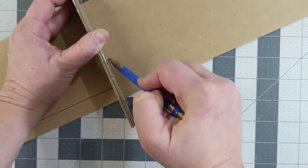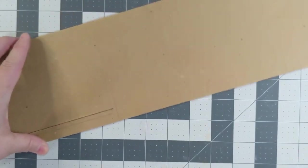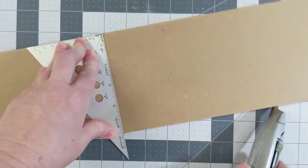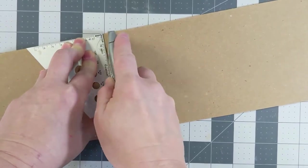You'll want to have the height about an eighth of an inch or two book board widths taller than the actual text block. So you'll mark that and then you can cut it.